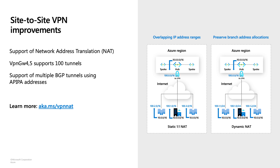Besides NAT, we also have other new features. If you are on VPN Gateway SKU 4 or 5, you can configure up to 100 tunnels. You can also configure multiple BGP tunnels using APIPA addresses, which are required by some other cloud service providers. So with this feature, if you have a deployment on multiple clouds, you can now set up multiple tunnels.